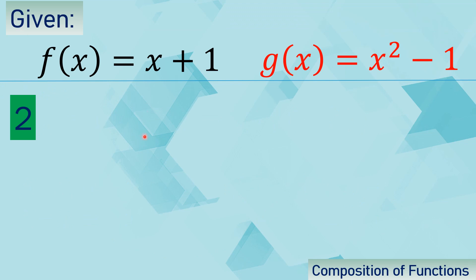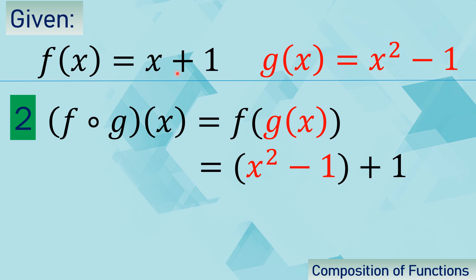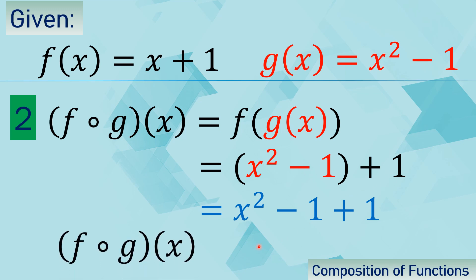In this next example, we are looking for f of g of x. Here, g of x will become the input of function f. That is why we use function f, letting x be equal to x squared minus 1. Evaluating and simplifying, negative 1 plus 1 gives you 0, so the answer is x squared. Meaning, f of g of x is x squared.